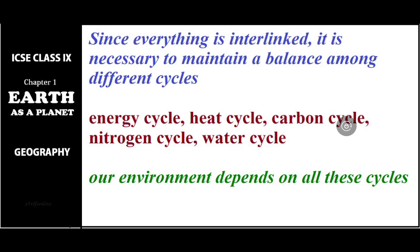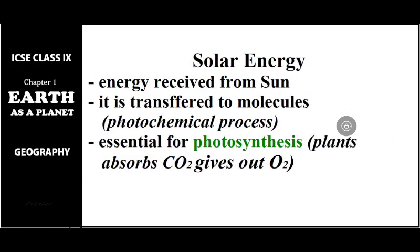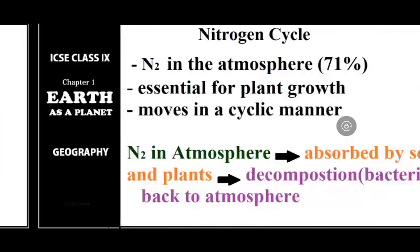Solar energy is the energy received from the sun. Energy reaches earth in the form of heat and light, and this energy is transferred into molecules through photochemical processes. This energy is essential for photosynthesis — the process by which plants make food. Through photosynthesis, plants absorb carbon dioxide and give out oxygen, which is necessary for animals and human beings. So solar energy is essential for all these cycles. The first cycle is the nitrogen cycle.